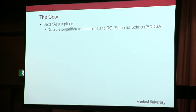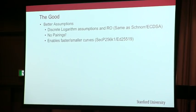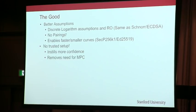So why would you use Bulletproofs? It seems to be just worse. Well, the discrete log assumption is more trusted — but unless you're very paranoid, that's probably not a reason. A slightly better reason is that you don't have to use pairings, which means you can use better elliptic curves like secp256k1 or ed25519 — curves we have more trust in, and faster implementations than the BLS curves used for Zcash.